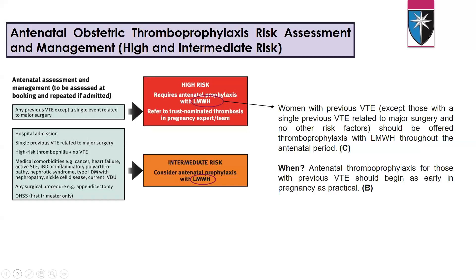For the intermediate risk group — hospital admission, single previous VTE related to major surgery, high-risk thrombophilia with no VTE, medical comorbidities, any surgical procedure, ovarian hyperstimulation syndrome — all of these are intermediate risk. We have to consider antenatal prophylaxis with low molecular weight heparin, and antenatal thromboprophylaxis for these patients should start as early as possible in pregnancy.